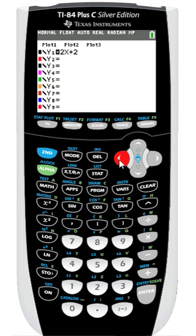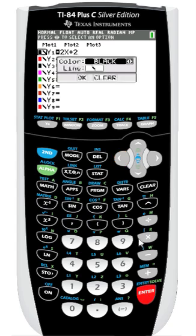I'll change those attributes by using the left arrow key to highlight them, and then pressing enter. Here, I can use the left and right arrow keys to change the color.